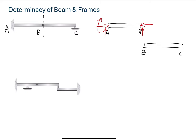On beam segment BC, at point B we have similar reaction forces. Support C is a roller support, so we have one reaction force. Now we need to check how many unknown reaction forces we need to determine. At support A we have three, at support B we have two, giving a total of five. We already counted two reaction forces at support B, so we don't count them again on beam BC. Adding support C's one reaction force, we have a total of six reaction forces.